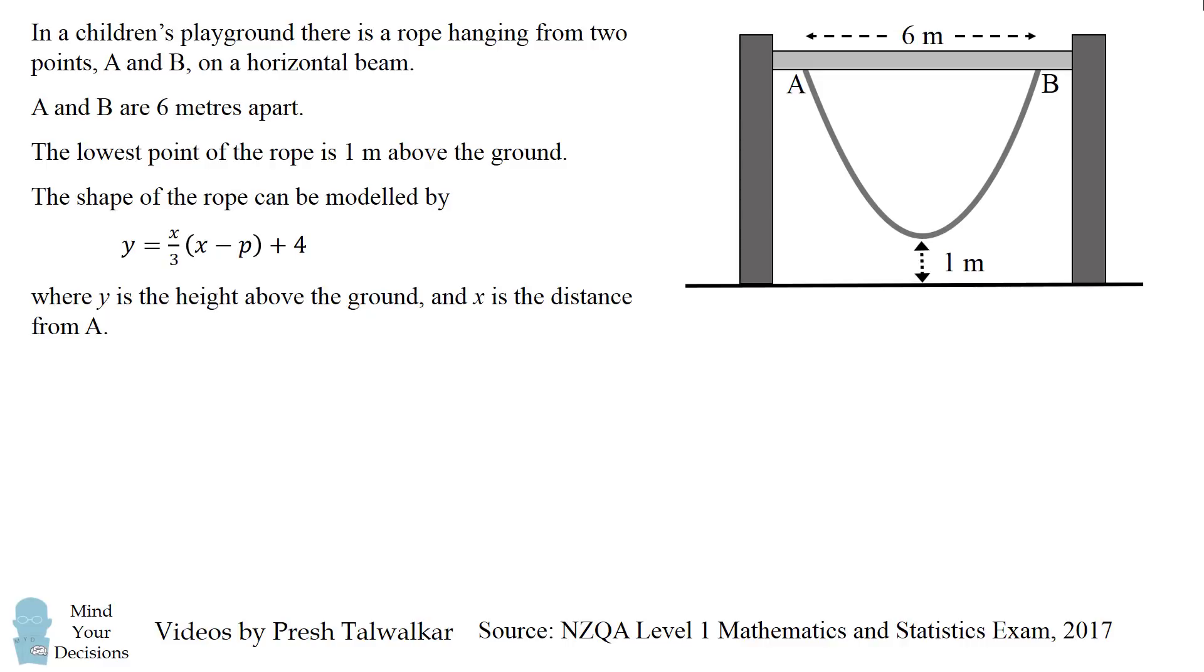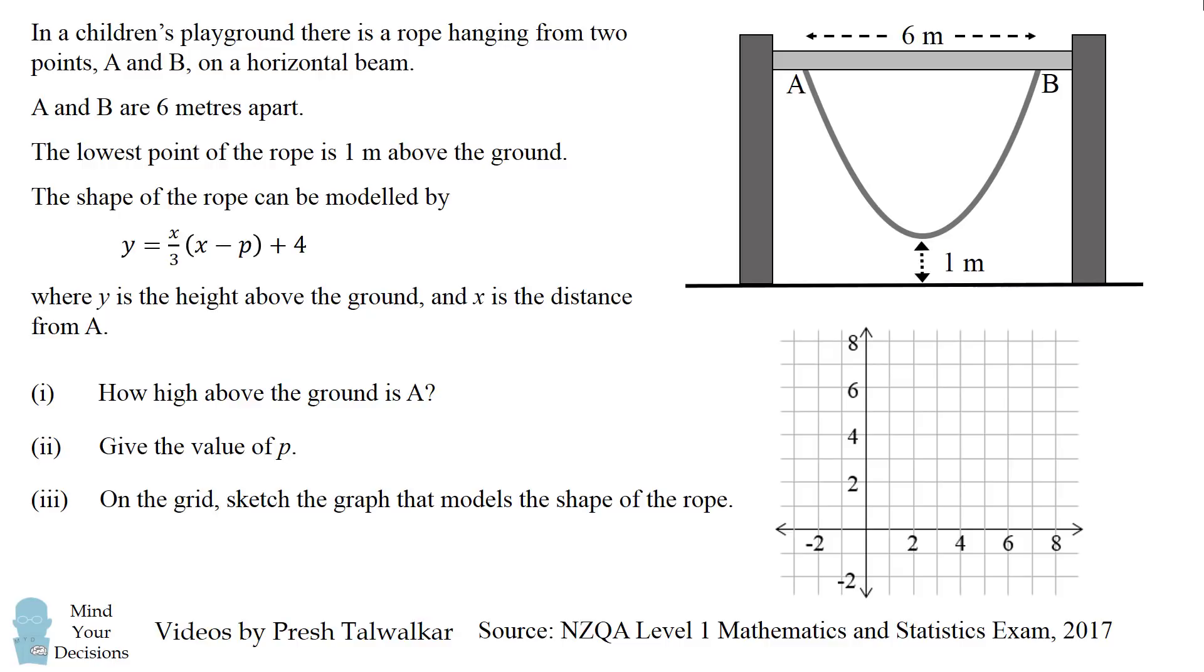This is a four part question. Part 1, how high above the ground is A? Part 2, give the value of p. Part 3, on the grid sketch the graph that models the shape of the rope.